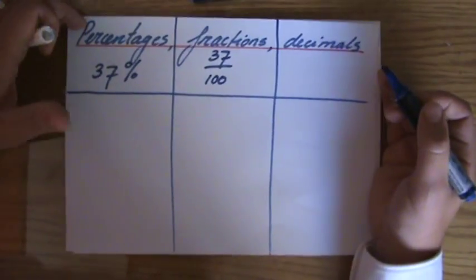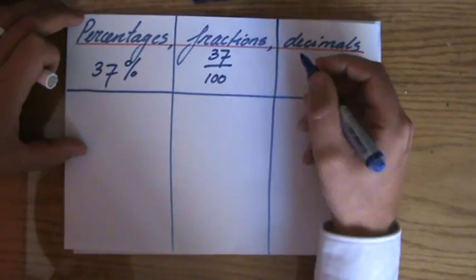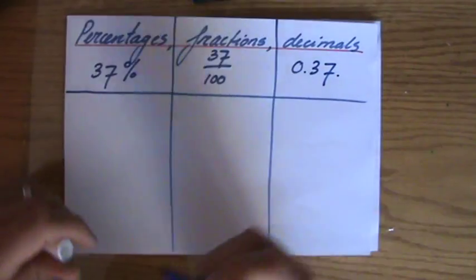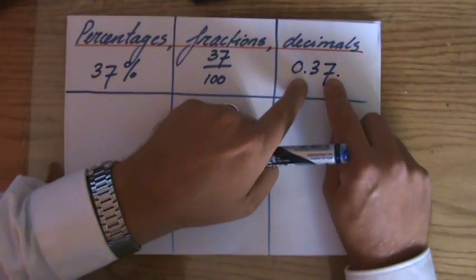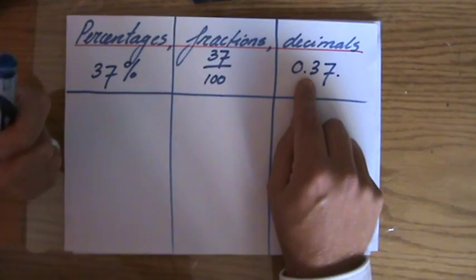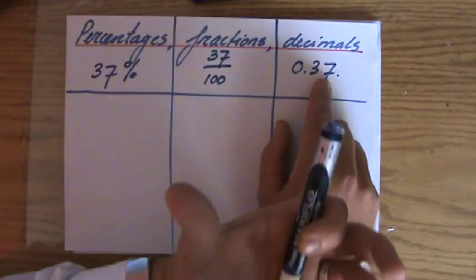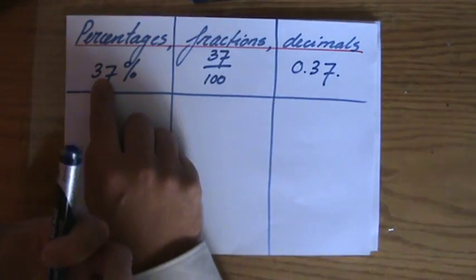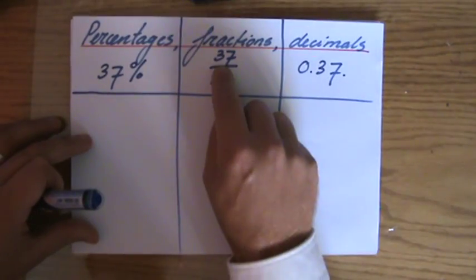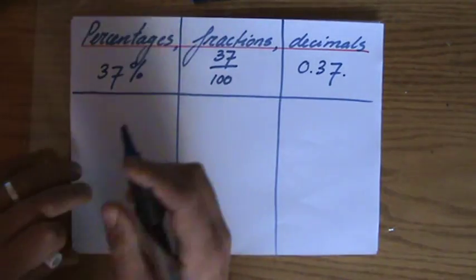Now, what is that as a decimal? 37 over a hundred will be 0.37. So to go from a decimal to a percentage, I would multiply it by 100%. 0.37 times 100% is 37%. And to go from a fraction to a percentage, I have to make sure the denominator is 100.